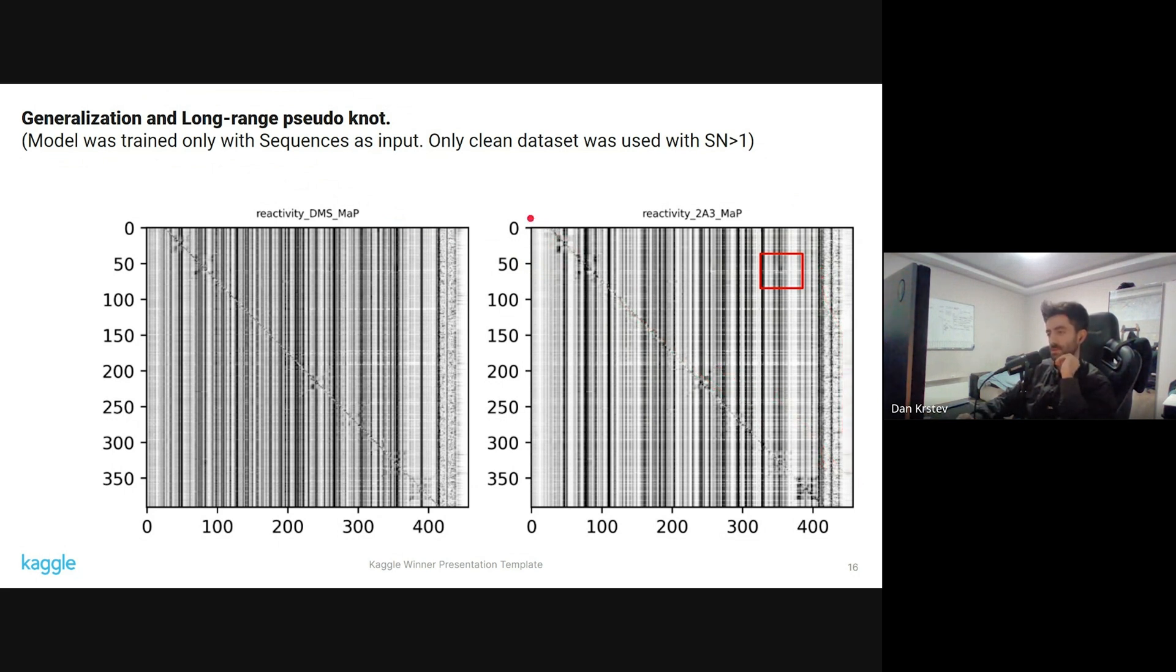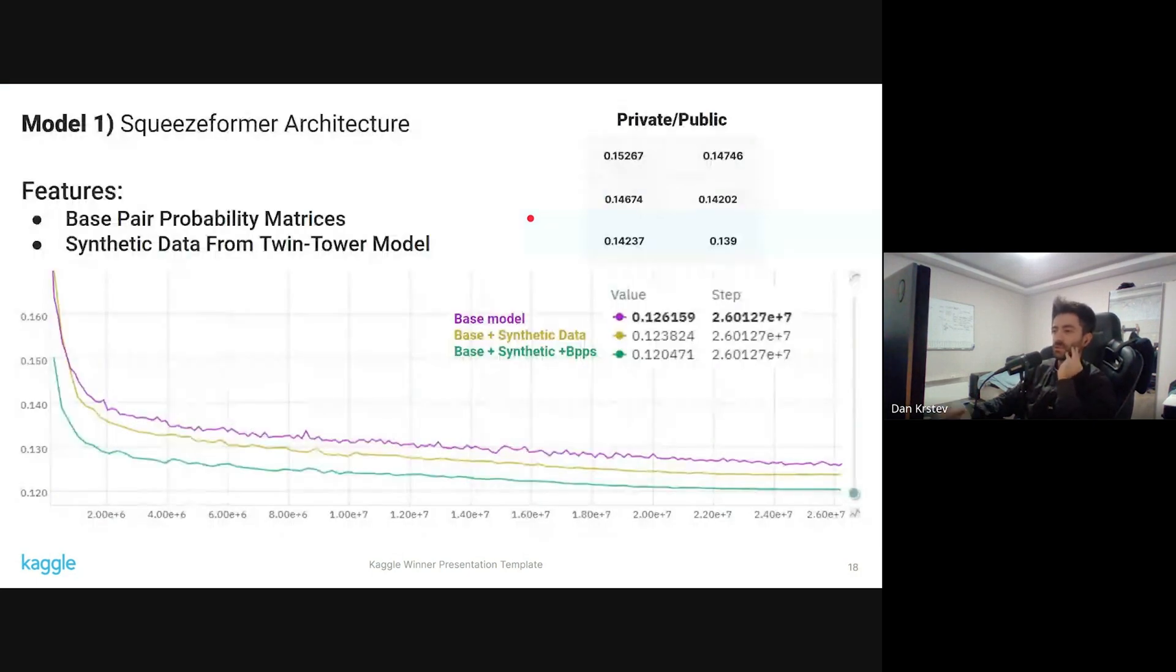Some of the feature selection and engineering, this is for the Squeezeformer architecture. We can clearly see on the graph that the base model without any additional features scores 0.14746 on the public and 0.15267 on the private. If we add the synthetic data that was created with the twin tower model, we get up to 0.14674. And then when we add the base model and synthetic data and BPPs, we get up until 0.14237, which was a standalone model and it scored, I think, 8th position.